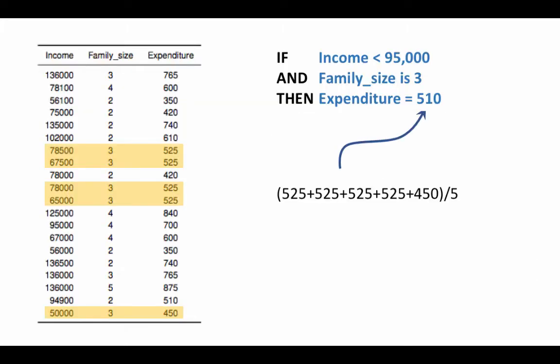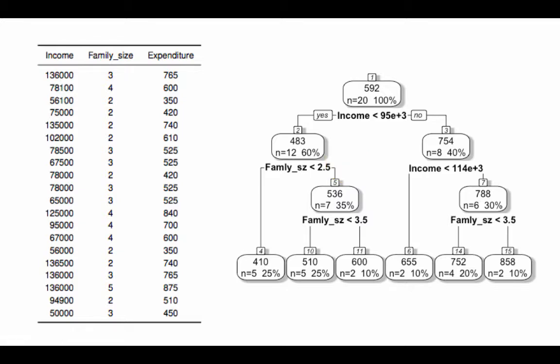Once again, to recap: the data is historical. We build a tree based on historical data and then use the tree to make predictions for new data going forward. For example, a family with an income of one hundred and twenty-five thousand and family size of three makes a reservation — we don't know their expenditure, but we use the tree to predict it. This is the same principle used throughout: use historical data to build a model, then predict going forward.